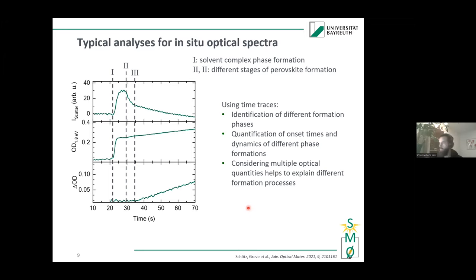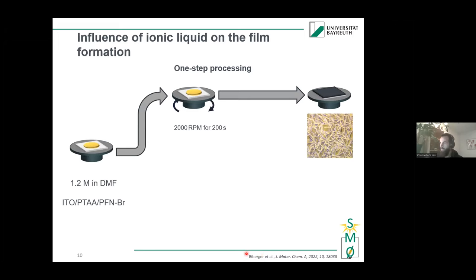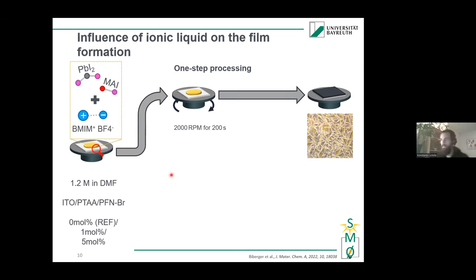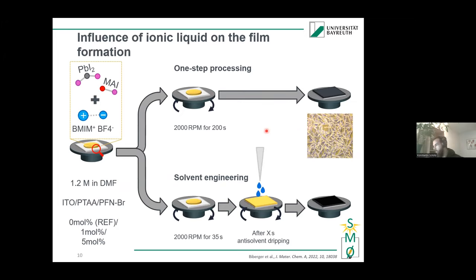Now that we have the tools to analyze the data, let's go to a recent study from Simon Biberger investigating the influence of ionic liquid on film formation. Ionic liquids are used to passivate perovskites and improve their optical properties. To investigate the influence on film formation, we looked at solutions with different ratios of ionic liquid. We also looked at the solvent engineering method, a modification of one-step processing where a so-called anti-solvent is added at a certain time, inhibiting solvent complex phase formation and forcing the precursors to crystallize — mostly in a very smooth way.